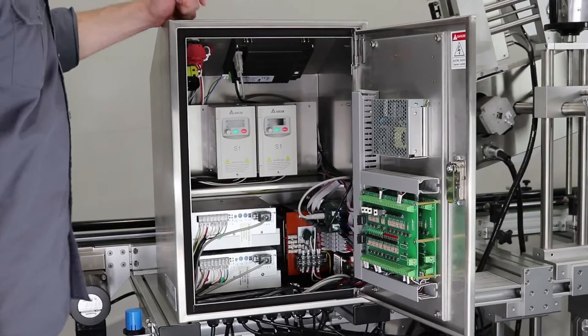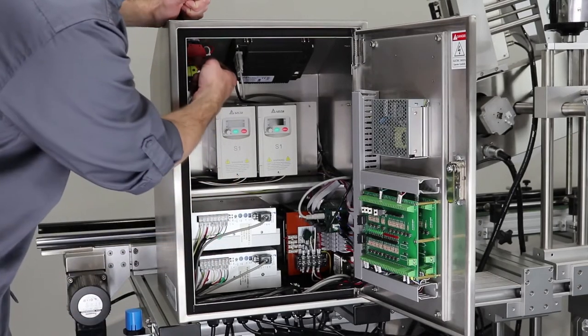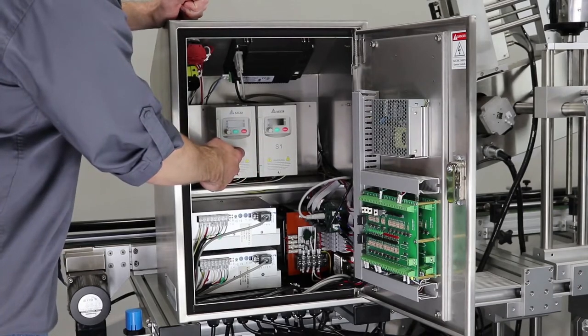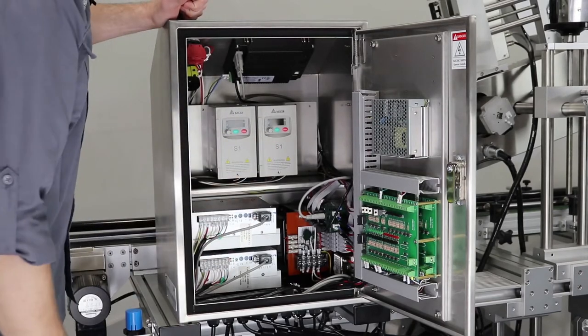All right, inside the PL221 control box, we've got your power on, the e-stop, the HMI, two VFDs, one to control the conveyors and then one to control the side belts.